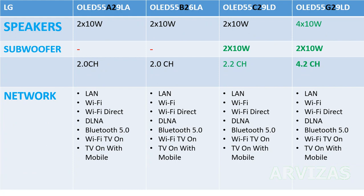Speakers: three of the televisions have only two speakers at 10 watts each, totaling 20 watts. The C2 model has subwoofers with 2.2 channels. The G2 model, being the priciest, has 4 speakers at 10 watts each plus 2 subwoofers at 10 watts, giving 4.2 channels.